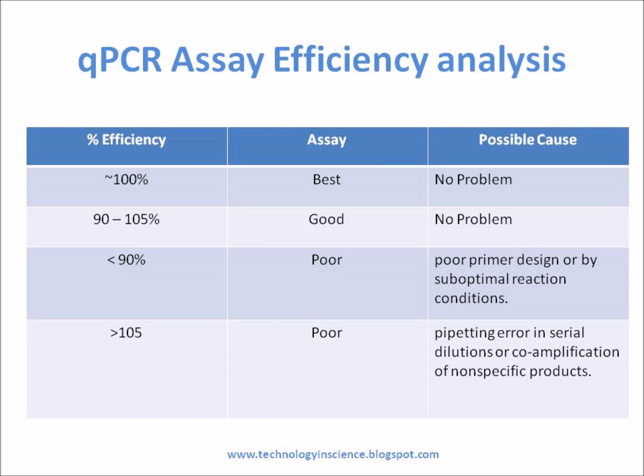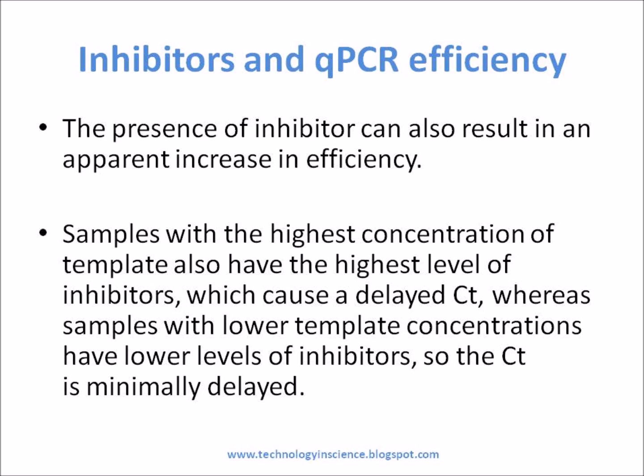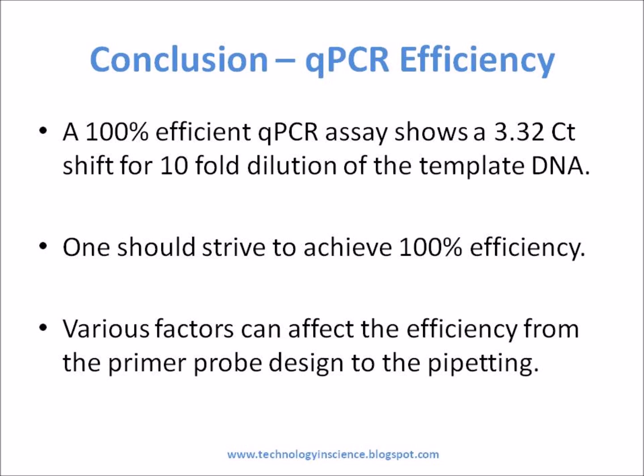When using the method described above to determine amplification efficiency, the presence of inhibitors can also result in an apparent increase in efficiency. This is because samples with the highest concentration of template also have the highest level of inhibitors, which cause a delayed CT, whereas samples with lower template concentrations have lower levels of inhibitors, so the CT is minimally delayed. As a result, the absolute value of the slope decreases and the calculated efficiency appears to increase.